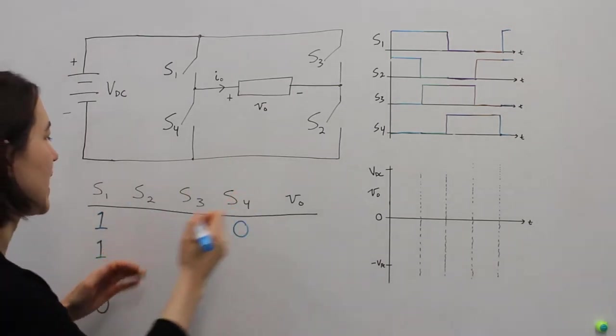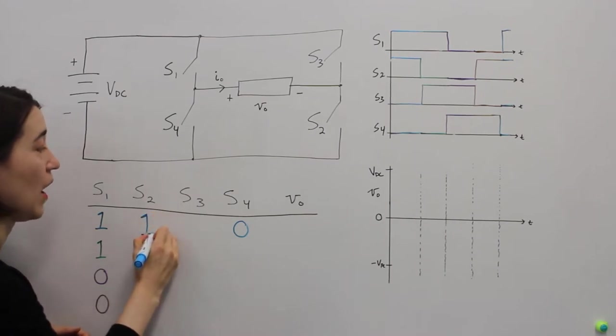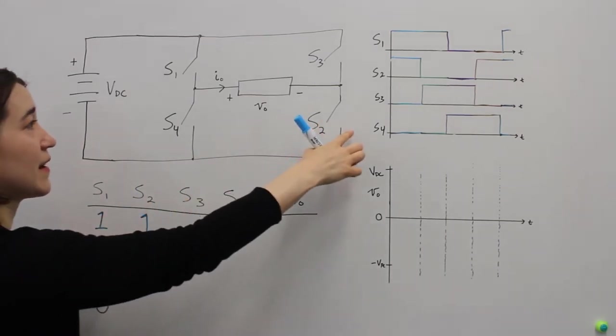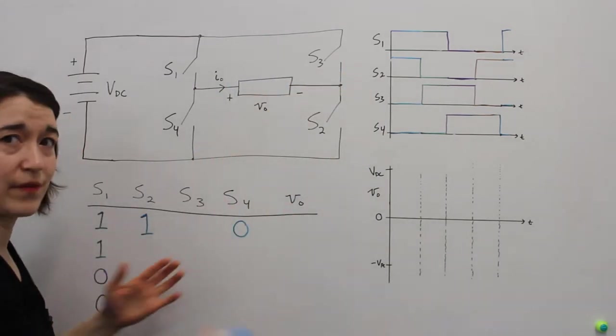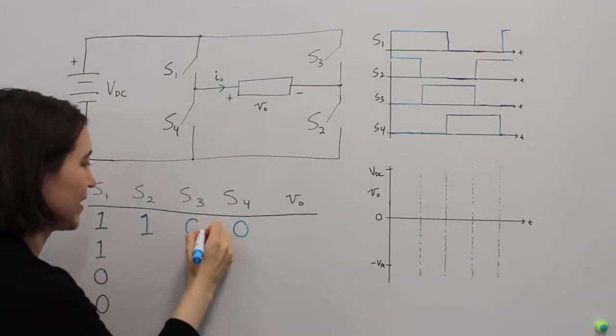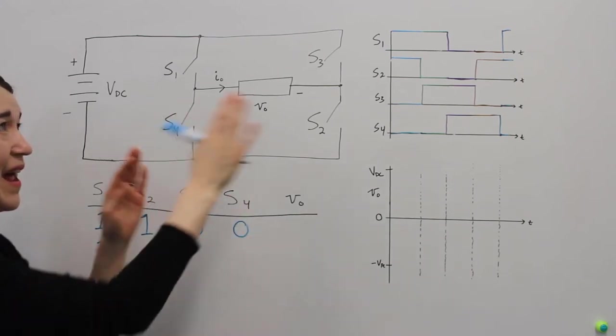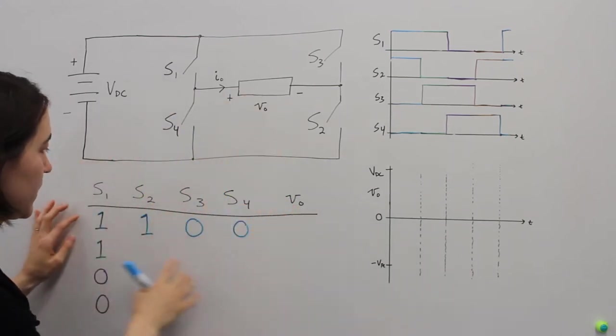Then we have to pick the states of S2 and S3. So let's assume that S2 is going to be on. So S1 is on and S2 is on. If this is on, this must be off in order to not violate any of the voltage or current laws and they'll maintain the complementary switching. So now we have this state.